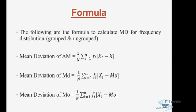What if we have a frequency distribution, either grouped or ungrouped? We simply use capital N, which is the summation of the frequencies, in place of the number of observations, and we multiply the difference with the corresponding value of the frequency. So this is the formula when we have a grouped or ungrouped frequency distribution.